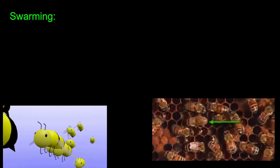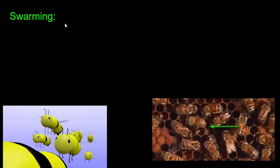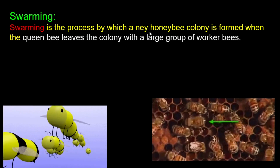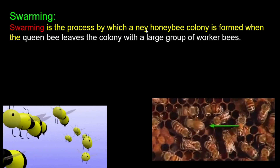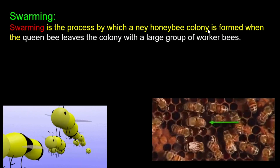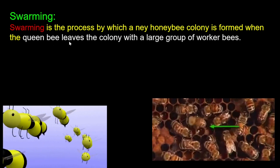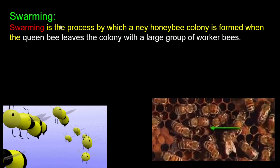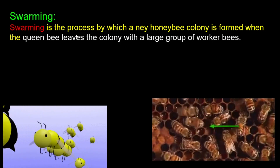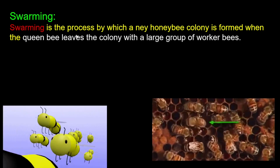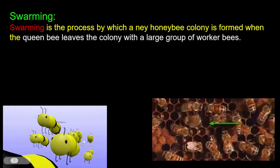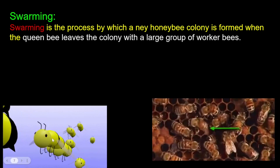The first behavior to discuss is swarming. Swarming is the process by which a new colony is formed, when the queen bee leaves the colony with a large group of worker bees. Swarming means a large batch of honeybees, with the queen and workers, moves together.